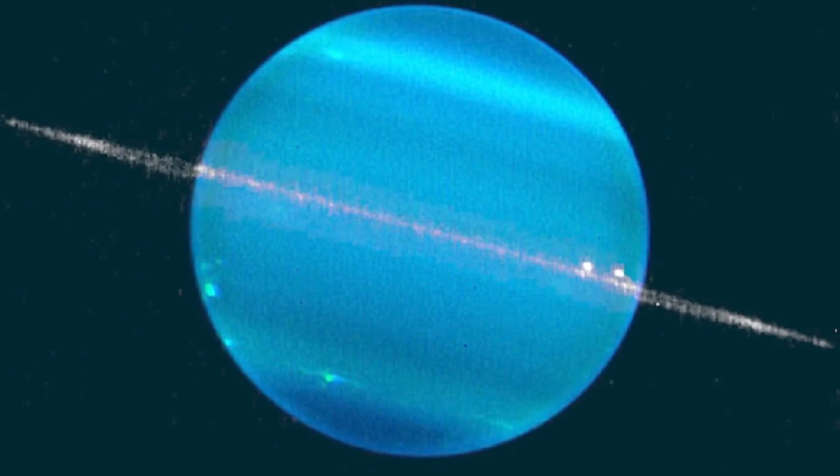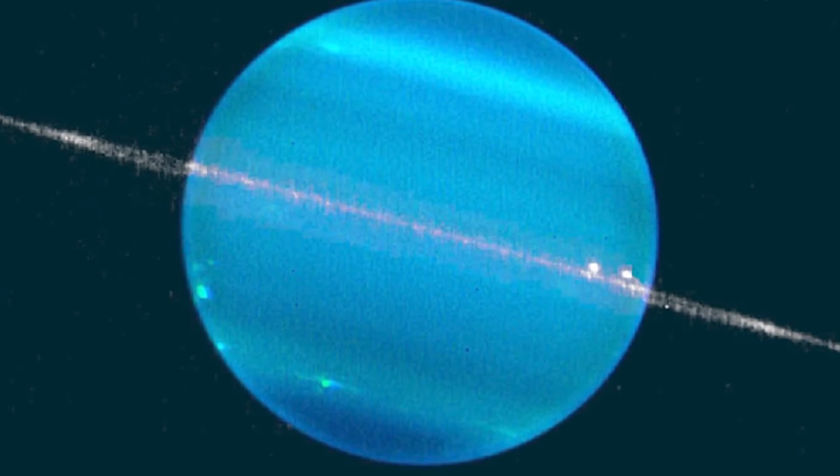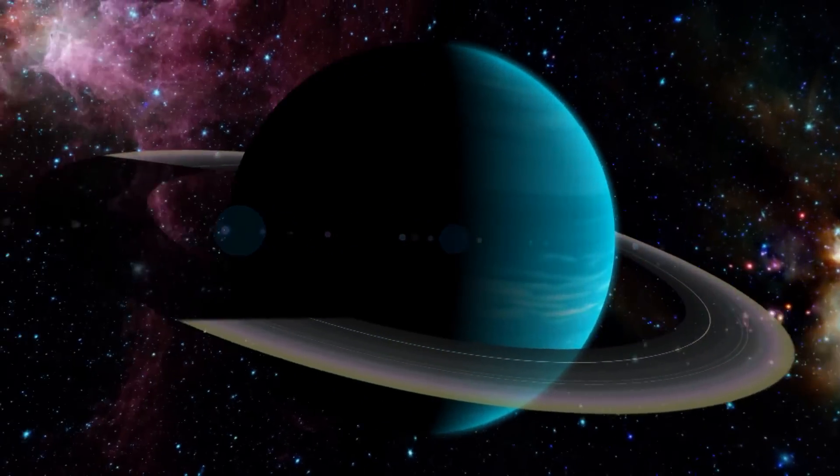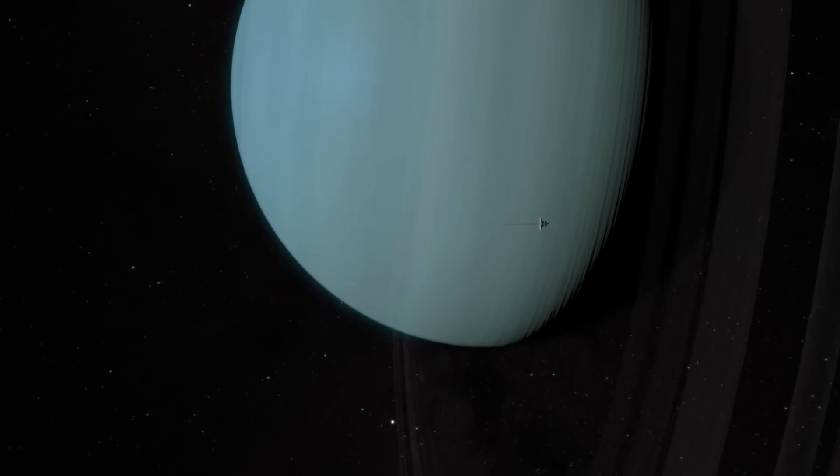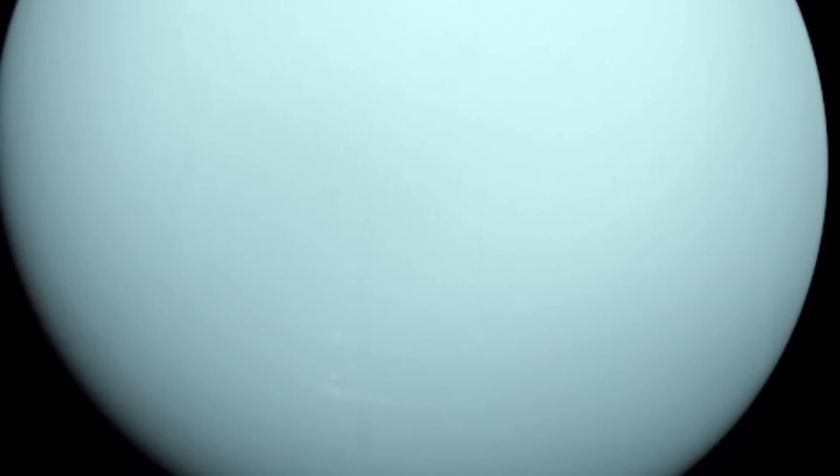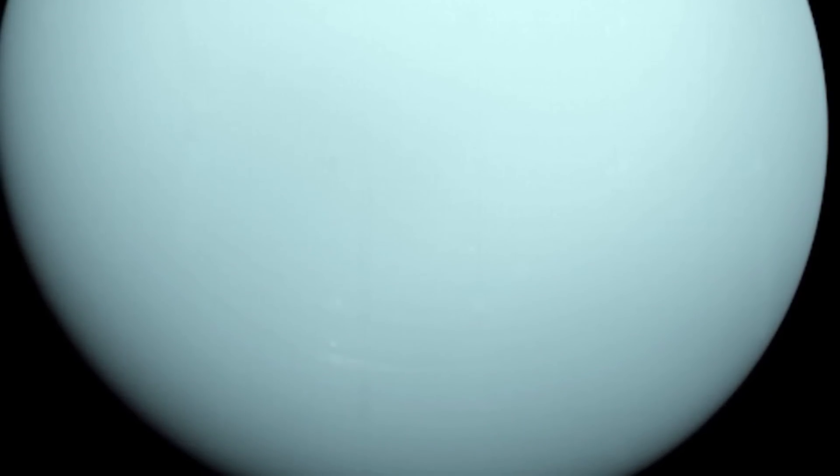Currently, it is late spring for the northern pole, which is visible here. Uranus's northern summer will be in 2028. In contrast, when Voyager 2 visited Uranus, it was summer at the South Pole. The South Pole is now on the dark side of the planet, out of view and facing the darkness of space.